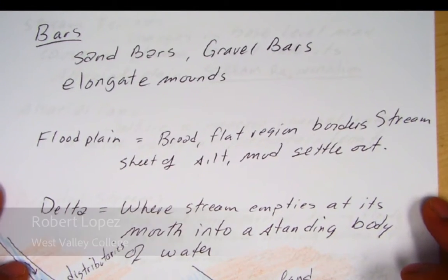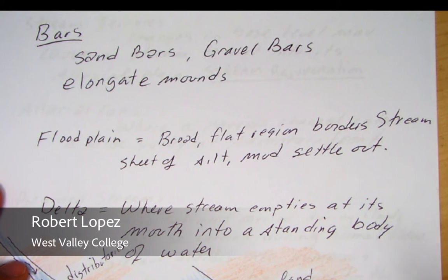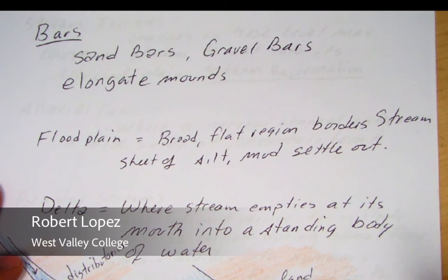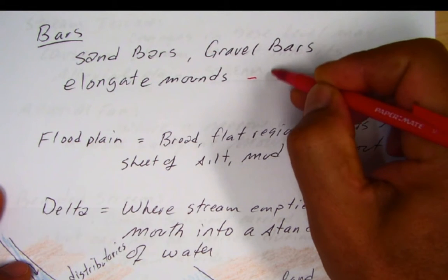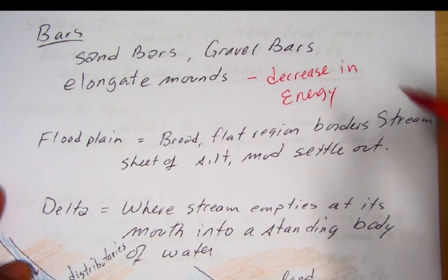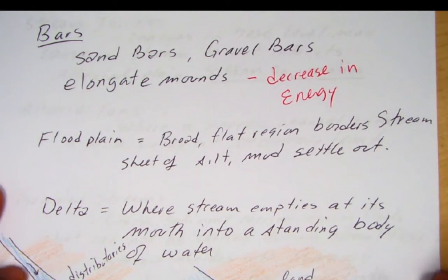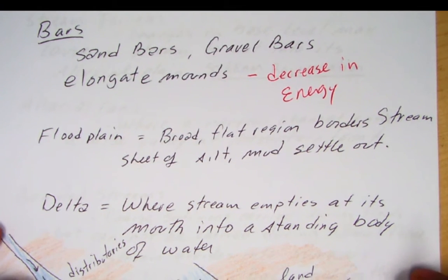We'll look at sandbars and gravel bars — they're elongate mounds forming where there is a decrease in energy along a region of the stream channel.